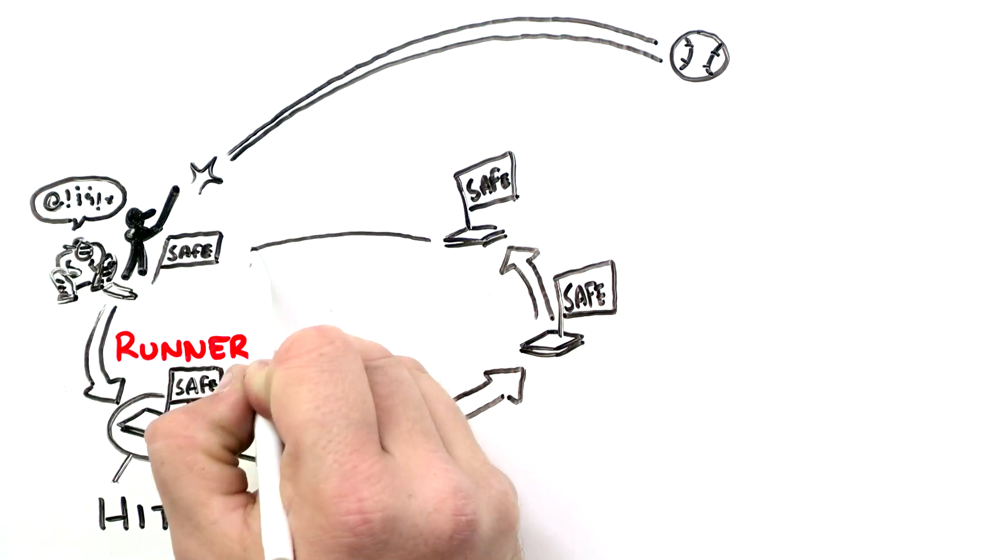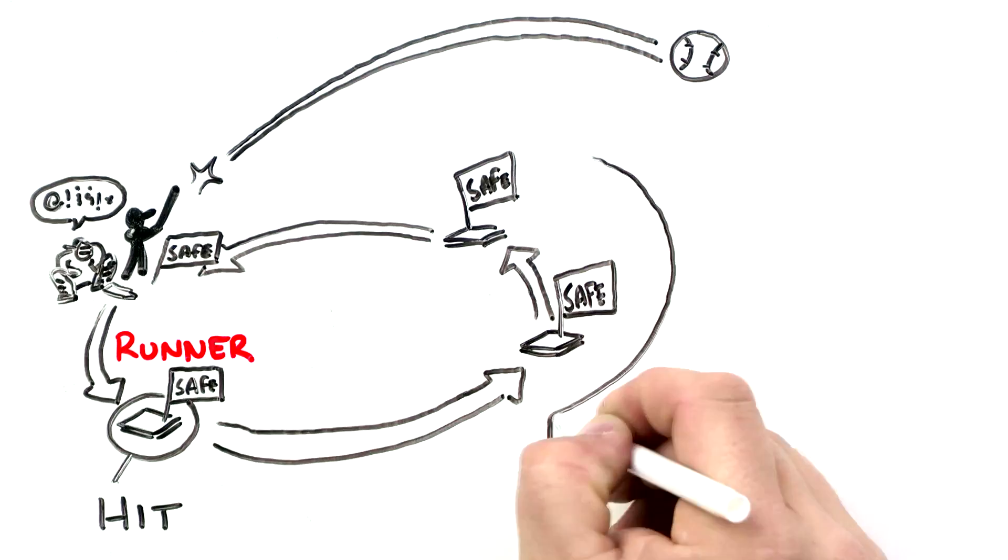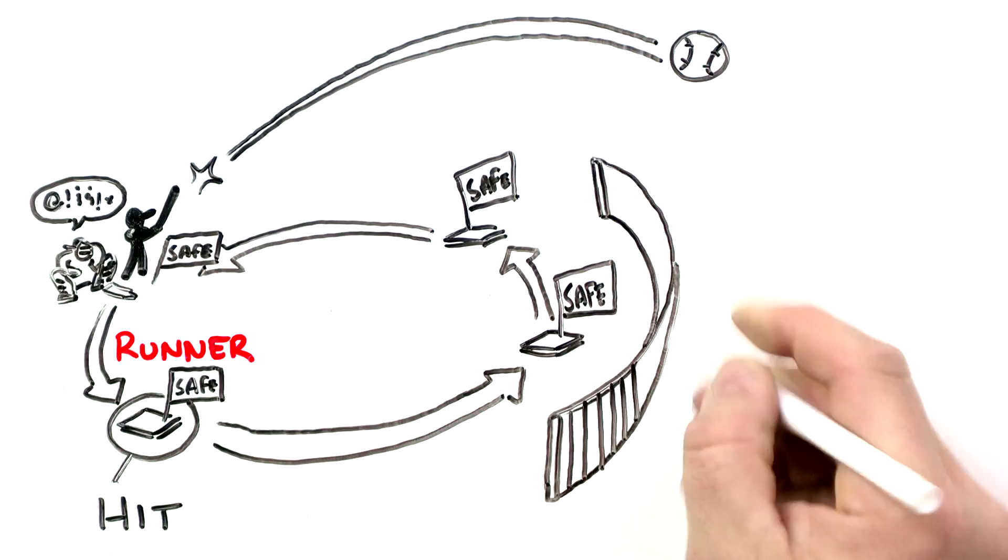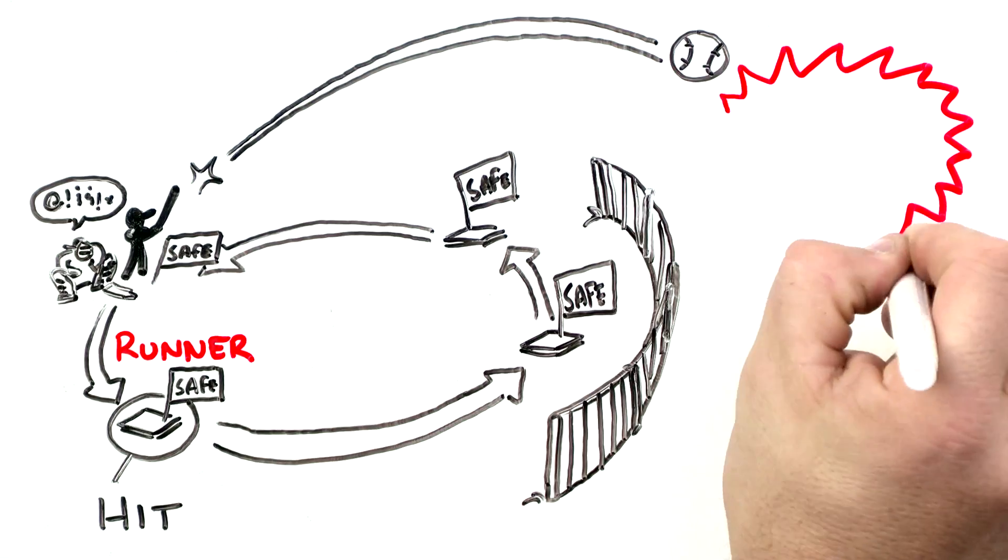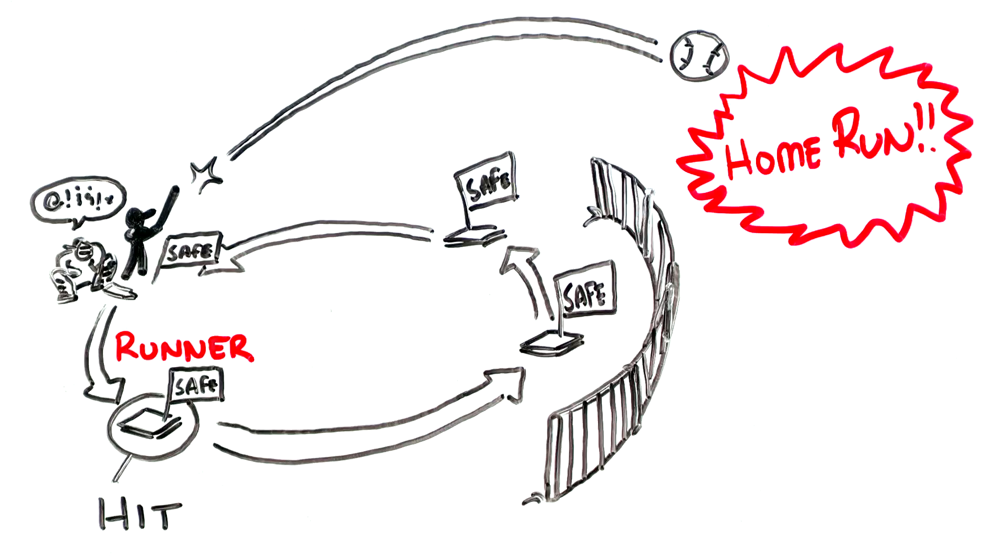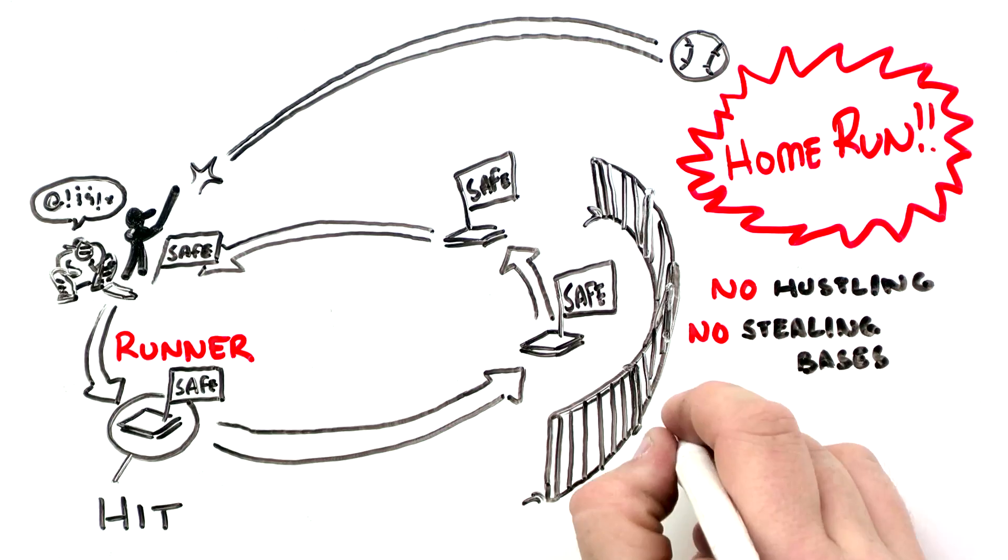Second, third, and then back to home. Runs are then scored when a runner makes it to home before there are three outs in the inning. If players hit the ball over the outfield fence, it's a home run and the batter can circle all four bases without worrying about hustling or stealing bases or getting out.